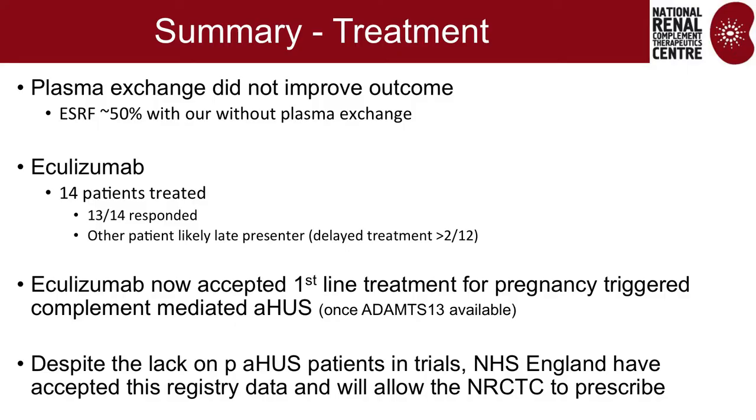In summary: pregnancy-associated HUS is severe, with 40–70% requiring dialysis. In the pre-eculizumab era, about 50% reached end-stage renal failure. Most pregnancy-associated HUS occurs postpartum, and of those during pregnancy, most occur in the third trimester. Complement genetic changes are present in more than 50% — exactly as seen in other atypical HUS. Plasma exchange does not improve outcome. Of 14 patients treated with eculizumab, 13 responded; NHS England is now accepting this registry data and will allow eculizumab treatment for pregnancy-associated aHUS.